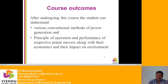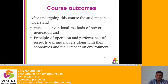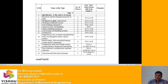Course outcomes: after undergoing this course, the student can understand the various conventional methods of power generation, which include diesel generators, gas turbines, hydel power plants, and nuclear power plants. Students will also understand the principle of operation and performance of respective prime movers along with their economics and their impact on the environment.